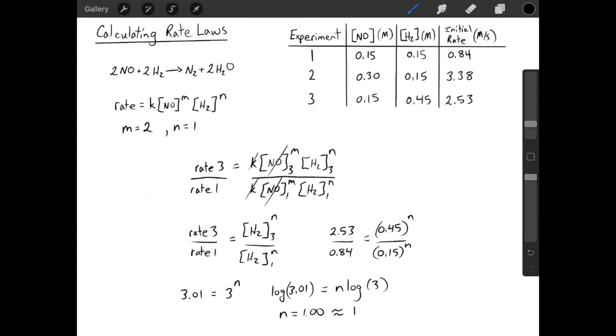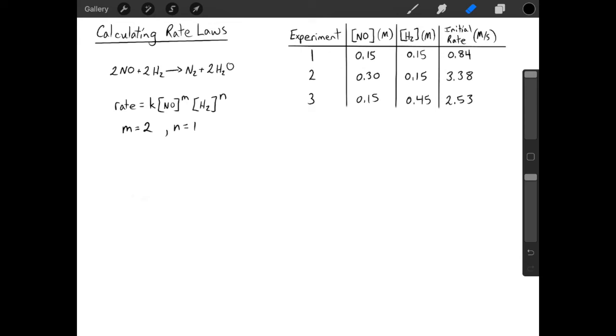We can find that the value of N is 1. Once we know our reaction orders, we can use any one of our trials to find the value of K. It doesn't make a difference, but we'll use experiment number 1.